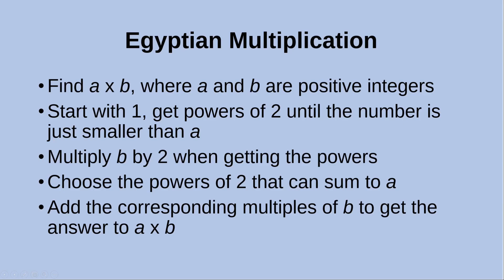In this approach we want to find out a times b where a and b are positive integers. We start with 1 and then get the powers of 2 until the number is just smaller than a, which is the first number in the multiplication. At the same time, we multiply the second number b by 2 as we get the powers. The important step is to choose the powers of 2 that sum up to a, and then add the corresponding multiples of b to get the answer to a times b.